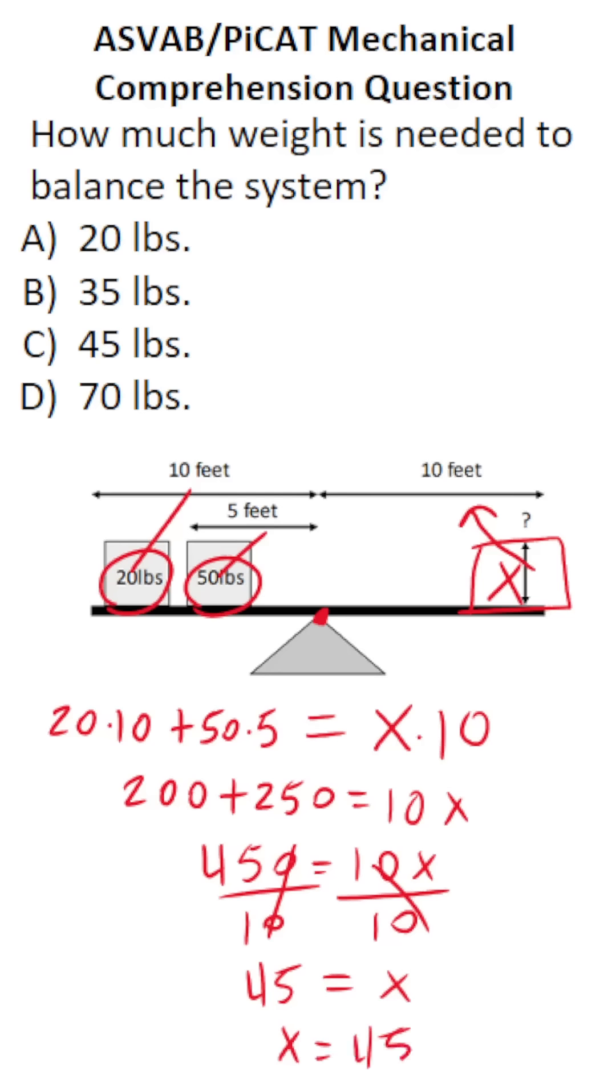In other words, in order to balance this system, you have to place a 45-pound weight right here. So this one is C.